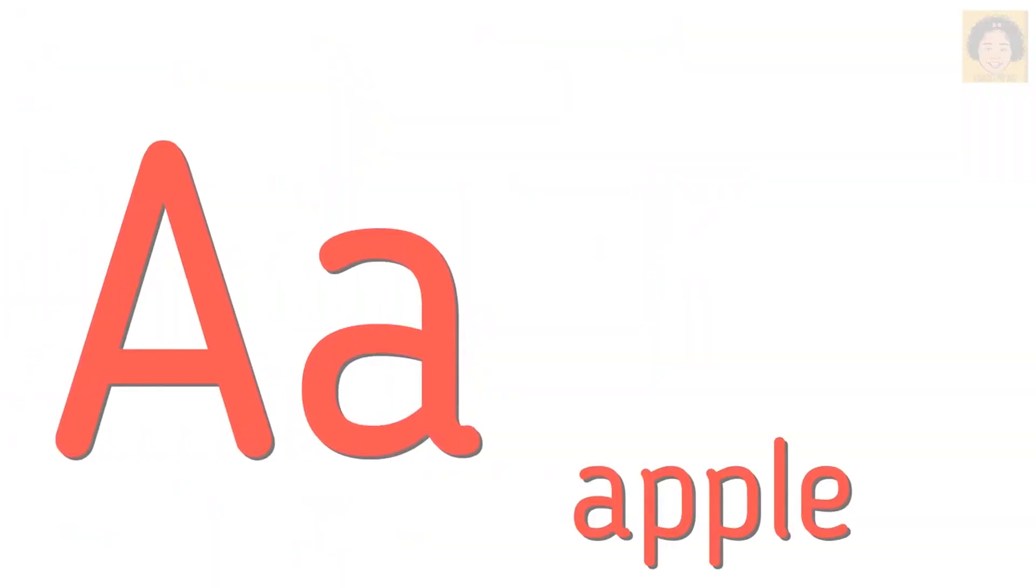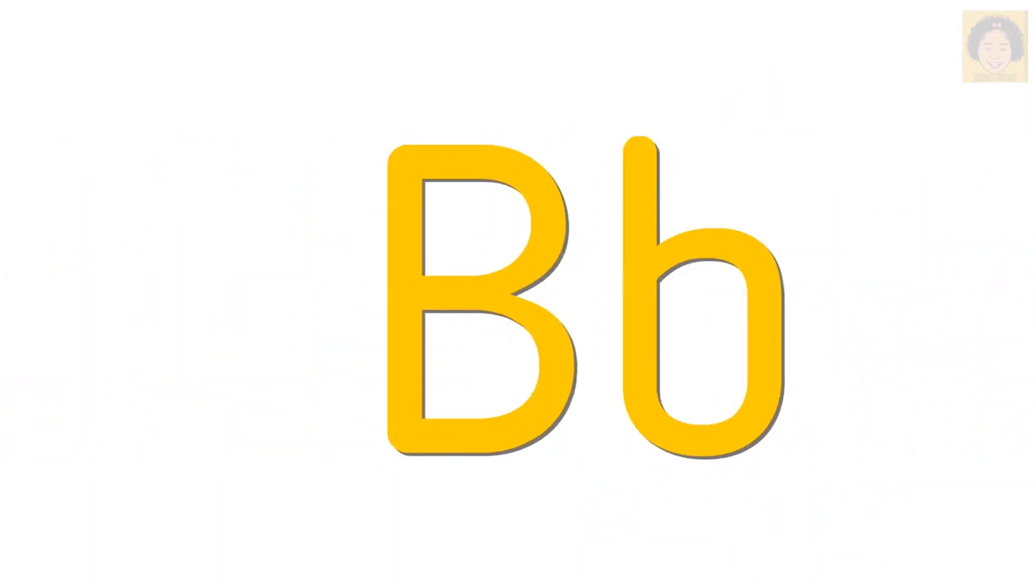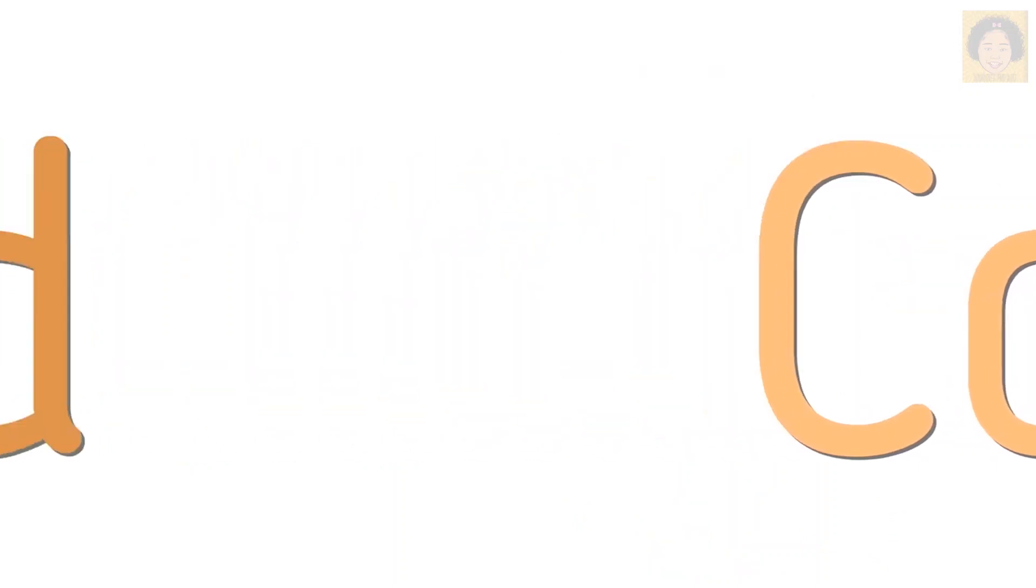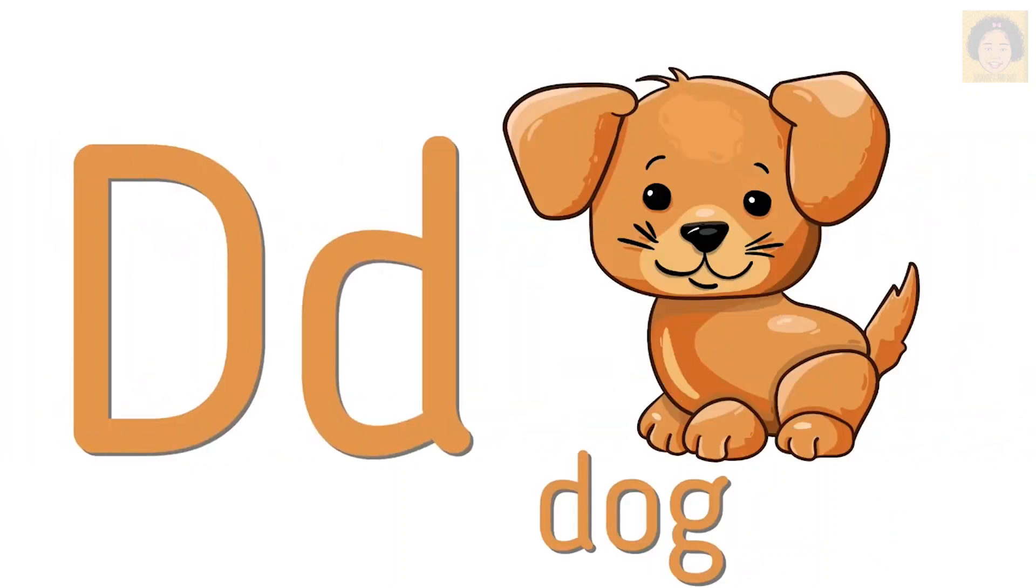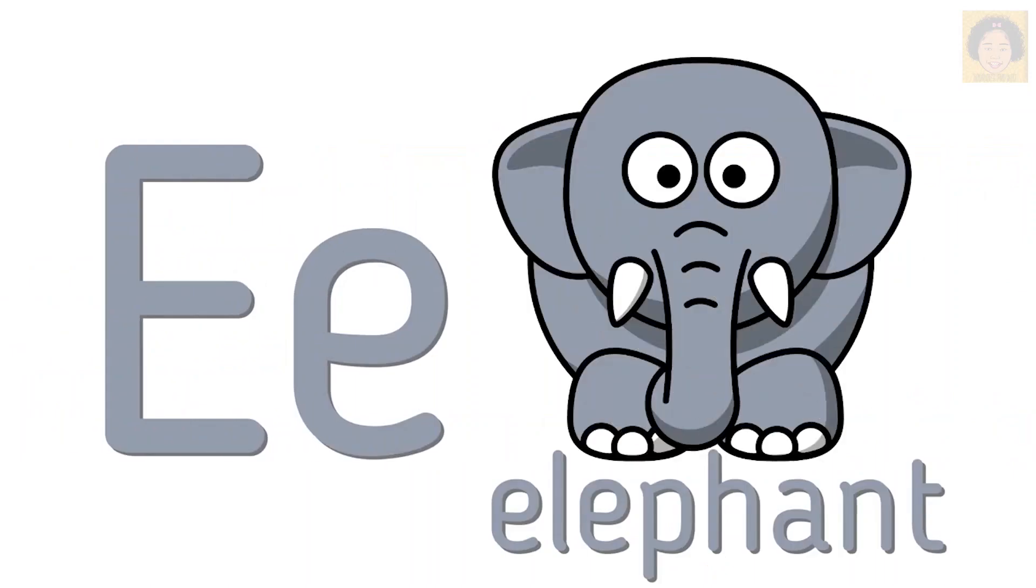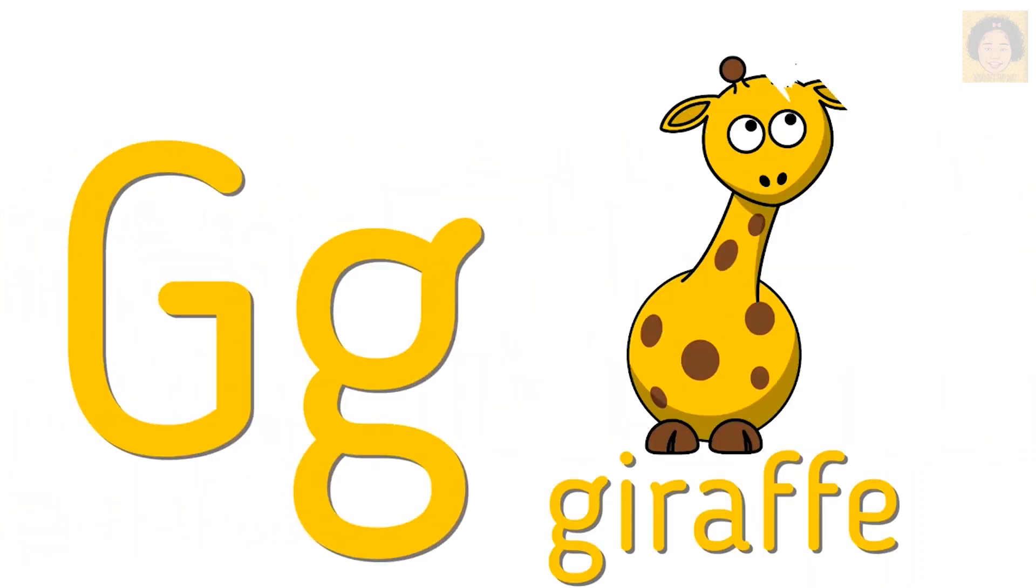A is for apple. B is for banana. C is for cat. D is for dog. E is for elephant. F is for frog. G is for giraffe.